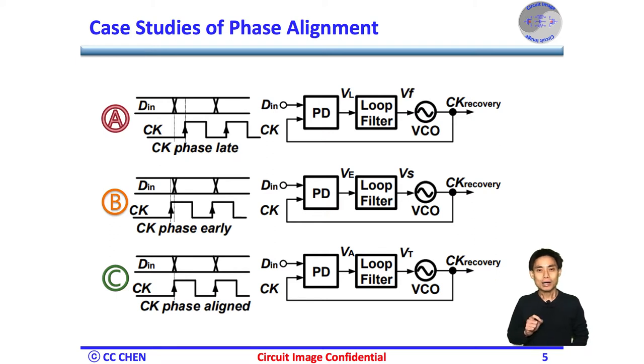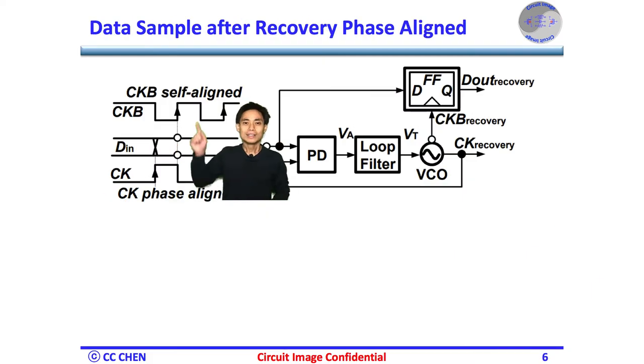Again, during the phase alignment process, you only care about the phase transition and the information of both data and clock. If that's the case, how do we sample the data? That's obvious from the timing diagram again.